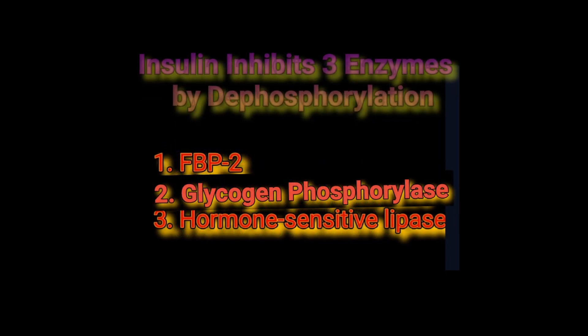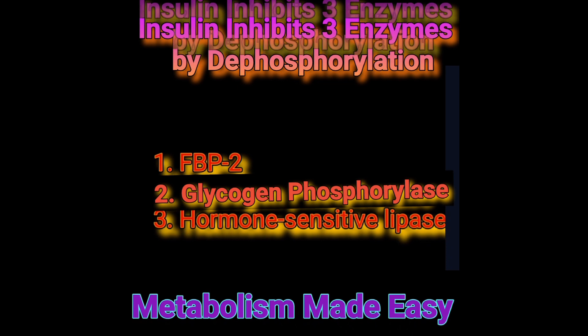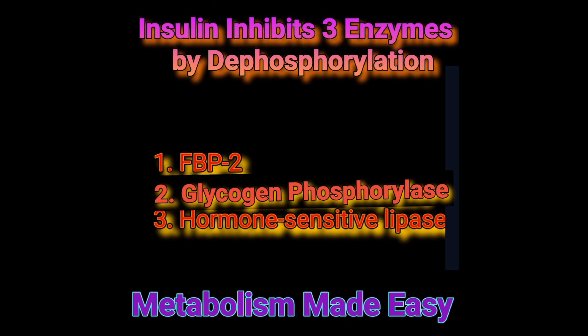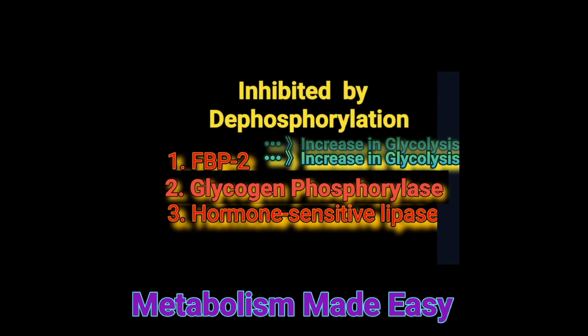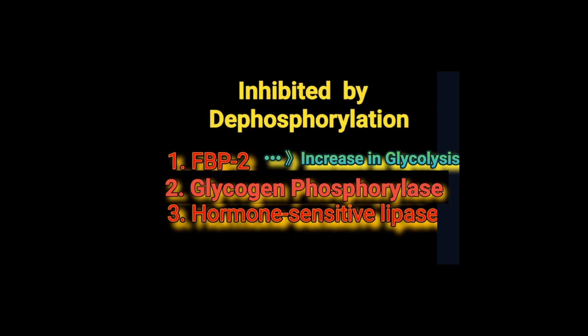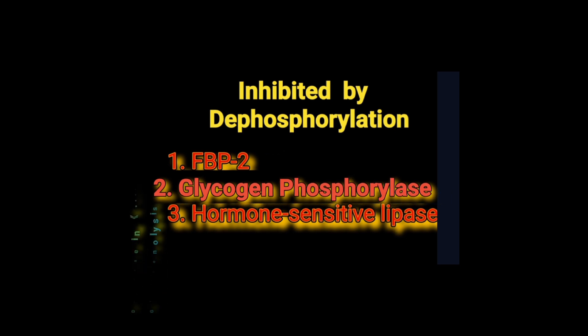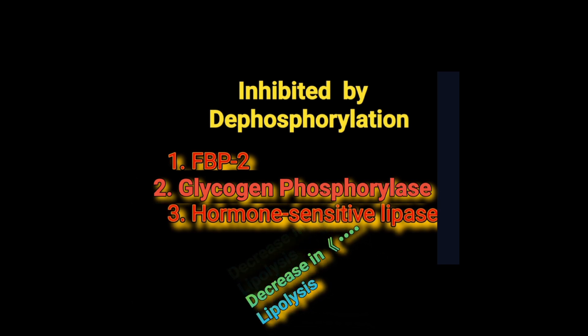Through a cascade of post-receptor events, insulin inhibits three enzymes by promoting their dephosphorylation. Those three enzymes are fructose bisphosphatase 2, glycogen phosphorylase, and hormone-sensitive lipase. Inhibition of fructose bisphosphatase allows the accumulation of fructose 2,6-bisphosphate required for activation of glycolysis and PFK1. Dephosphorylation of glycogen phosphorylase inhibits it and inhibits glycogenolysis. Dephosphorylation of hormone-sensitive lipase inhibits lipolysis of stored triacylglycerols in adipose tissue.